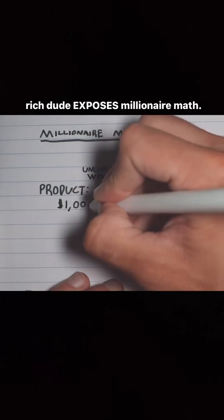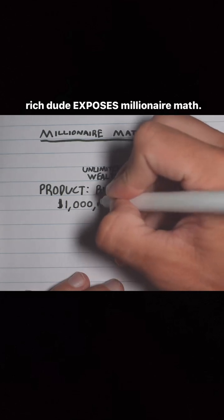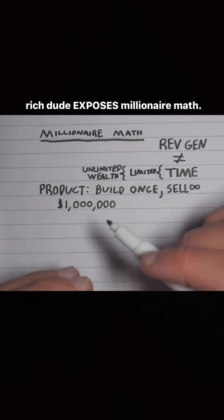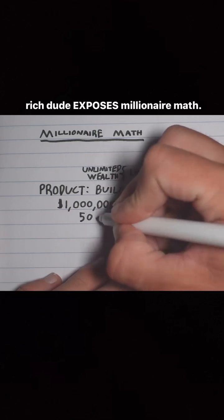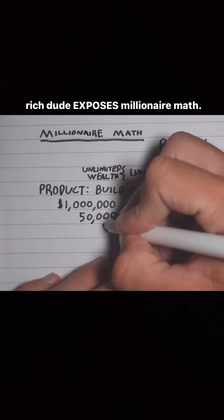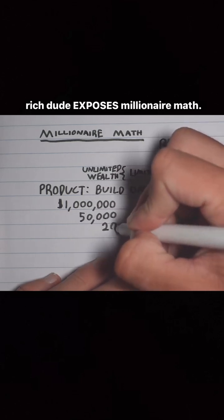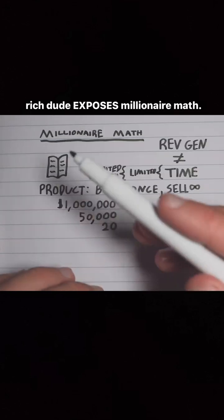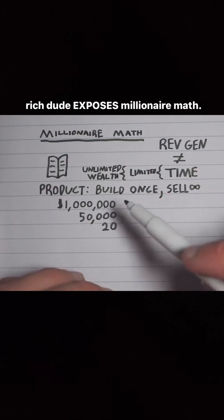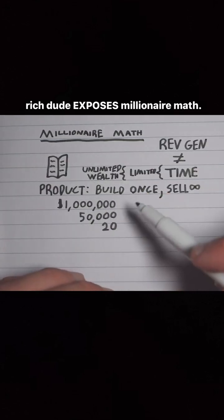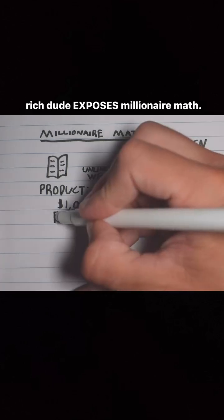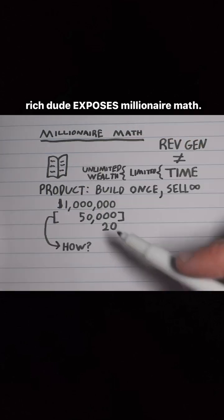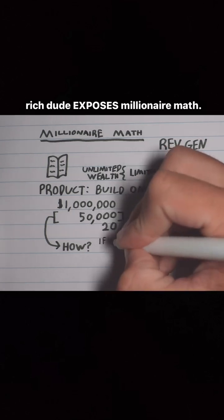We're going to reverse engineer this from a million dollars, because this is literally 10 years of income for the average American. All you would need to do is get 50,000 customers for something that costs $20. For the sake of this video, we're going to say that the product is an ebook, so it hits the target of build once, sell unlimited times. The first question that hits everybody's mind is: I don't know how to get 50,000 customers.